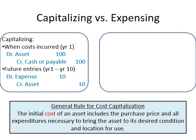From year one to year ten, we equally allocate this $100. When we generate benefit in each year, we recognize the related expense: debit expense $10 and reduce our asset by $10. This is capitalization — when a cost can benefit us in future years, we capitalize it first and then expense it over the following years.